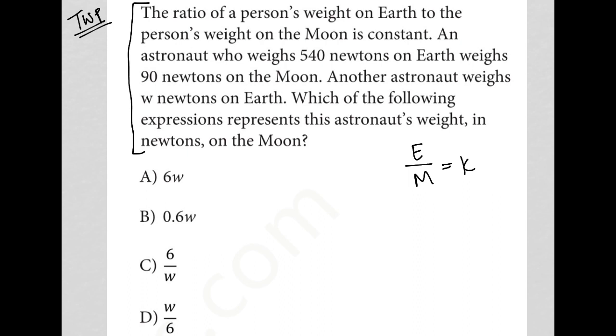An astronaut who weighs 540 newtons on earth, so 540, weighs 90 newtons on the moon. Okay, well that's very interesting. So 90 on the moon, that tells me that K must be six because 540 divided by 90, or 54 divided by nine, is six. So six equals K.